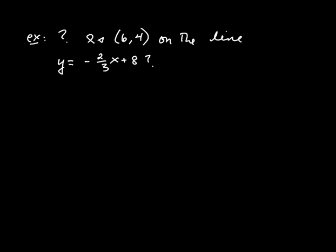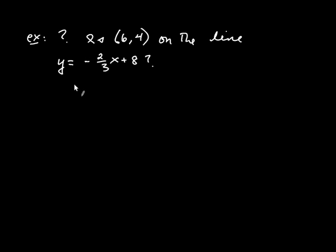The first question we're going to ask is the following: is the point (6, 4) on the line y equals negative 2/3 x plus 8? How would you figure out if a point is actually on a line? You'd plug in 6 for x and 4 for y, and if you get a true statement, that means the point (6, 4) is on the line. We're asking ourselves: does (6, 4) satisfy the equation of this line?